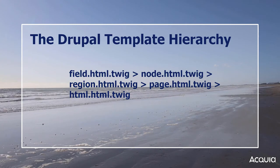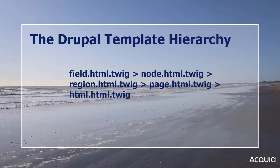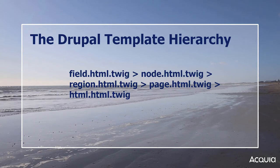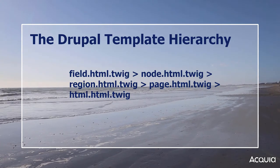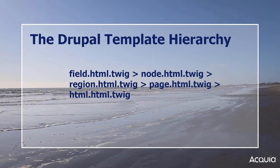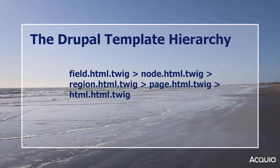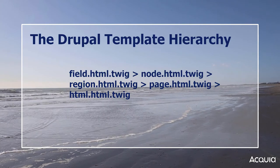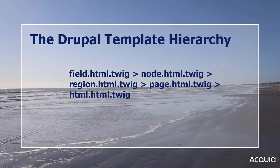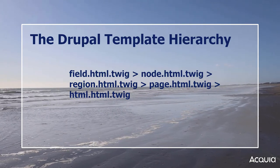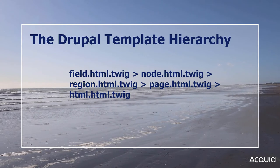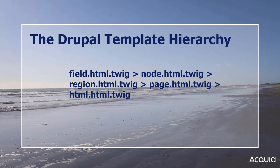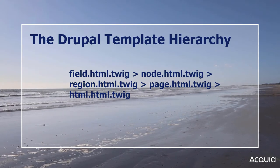Drupal then goes up the ladder until it reaches the most generic html.html.twig file, which is rendered last. Although named ambiguously, html.html.twig provides the basic structure of a single Drupal page. The hierarchy looks like this: first the field, then the node, then a region, then the page, and finally the html template file.